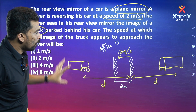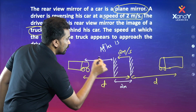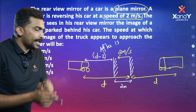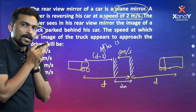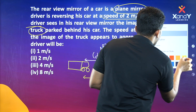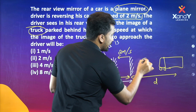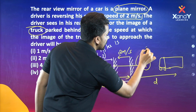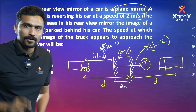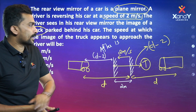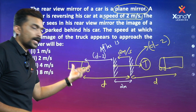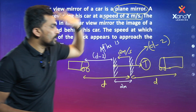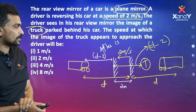Now, the image of the truck is at distance D minus 2 behind the mirror. The object distance is D minus 2, and the image distance is also D minus 2. So the image has moved from D to D minus 2 on both sides. Is that clear?